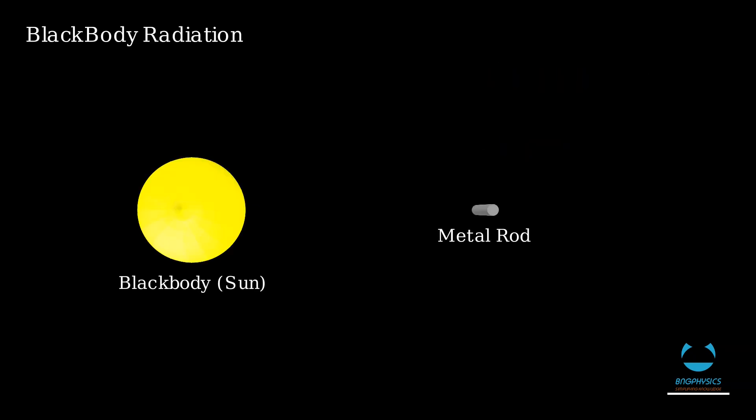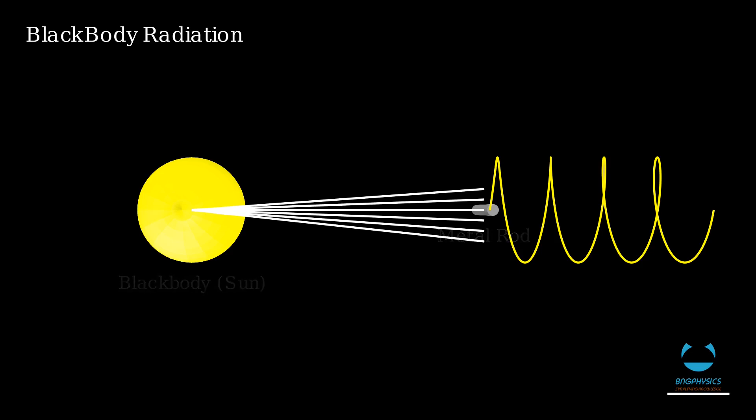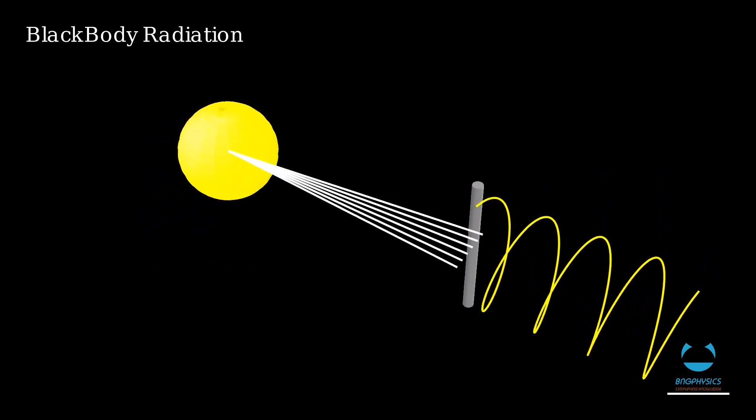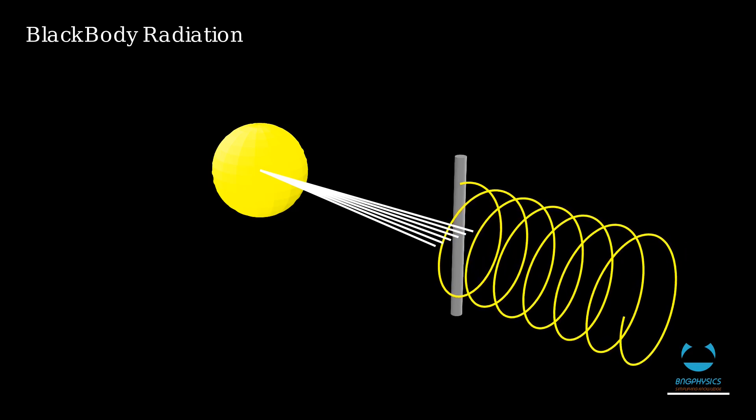For example, this metal rod, as it absorbs light that comes from the sun, it warms up and thus emits electromagnetic waves as heat to the surrounding environment.